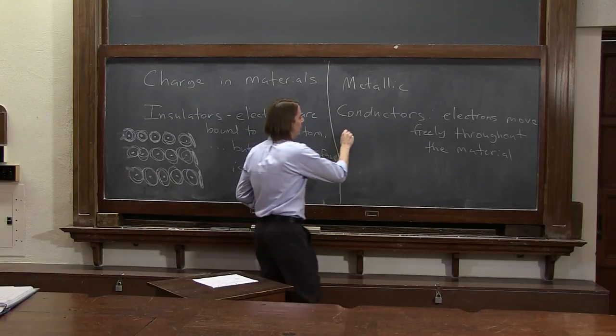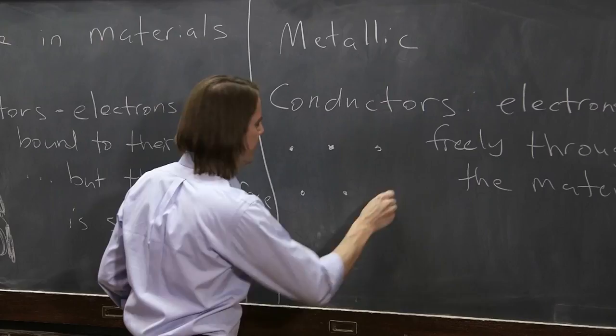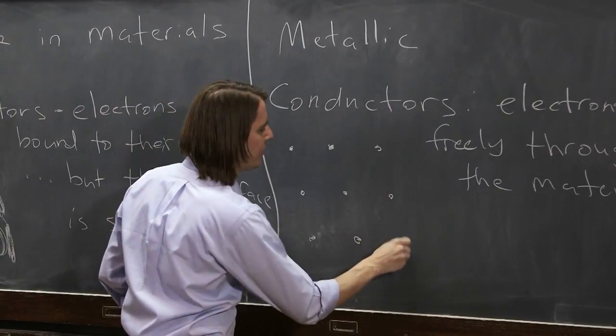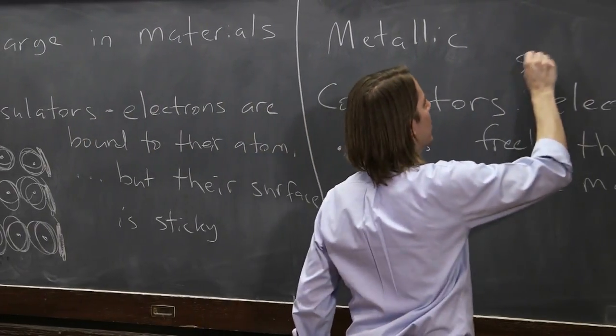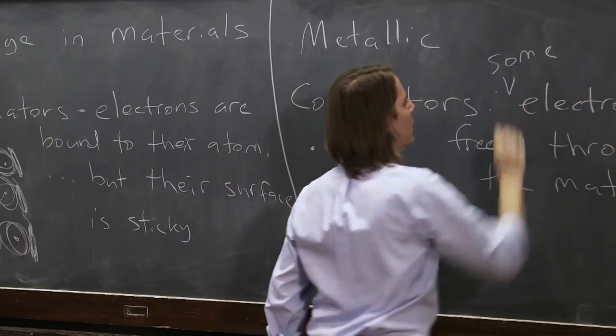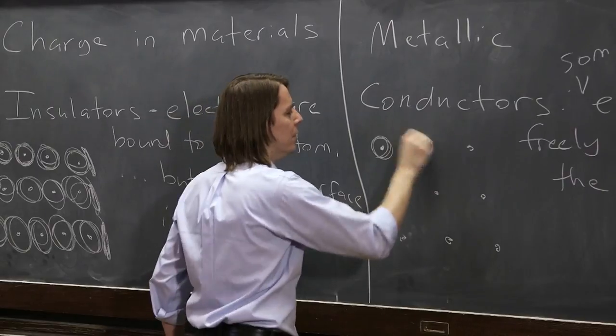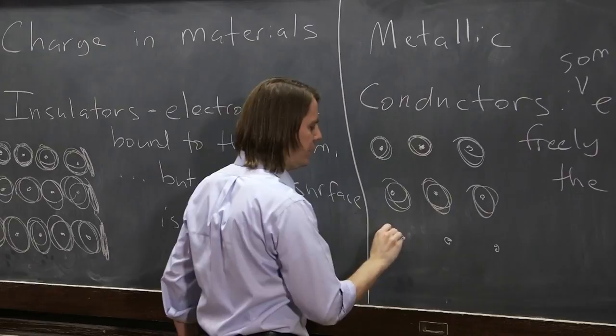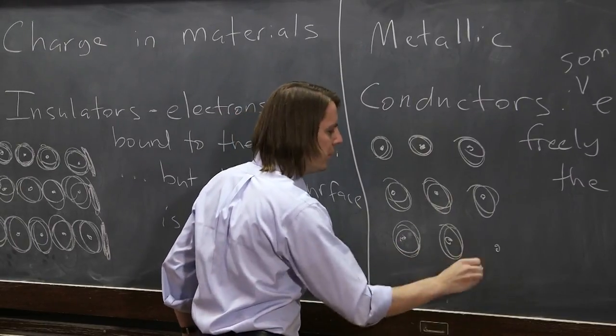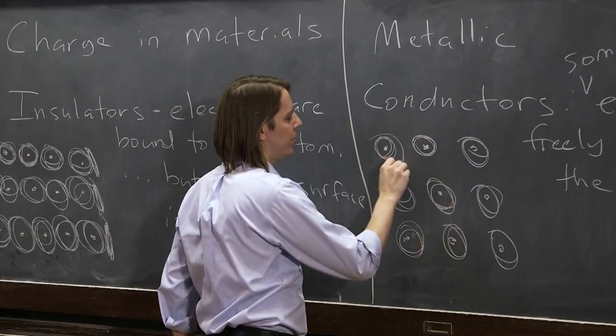So if I were to draw a metal like this, here's your atoms like that, and I left out one word, some electrons move freely through the material. So some of the electrons are still bound, just like they were in the insulator. These electrons do not leave their nucleus, but then some are just free to wander around.